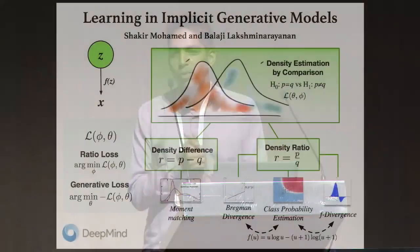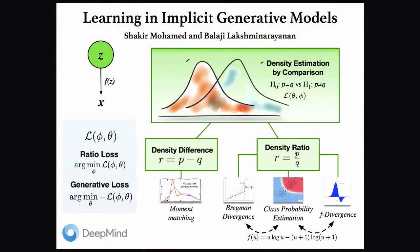If you were a statistician, everything we spoke about today you would talk about under the topic of likelihood-free inference. If you are an econometrician, you would talk about these problems as a problem of indirect inference. In the book of Hastie and Tibshirani, everything we spoke about today you would call unsupervised as supervised learning. Other people have called this density estimation by comparison, and more in probability theory, you would talk about non-maximum likelihood learning.